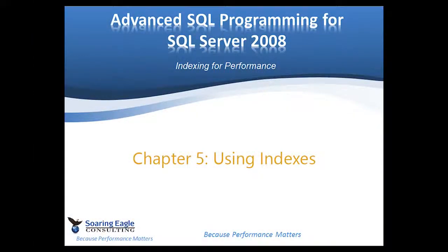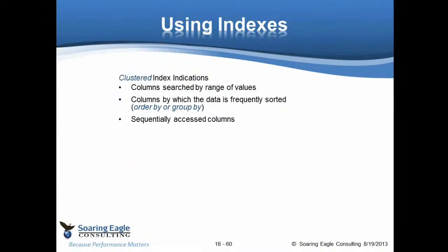So clustered index indications are ranges of value, group buys, order buys, sequentially accessed columns, join columns. I love changing join columns to clustered indexes. Static columns, because if the clustered index changes and the row is caused to move, that means all the ancillary non-clustered indexes have to change.